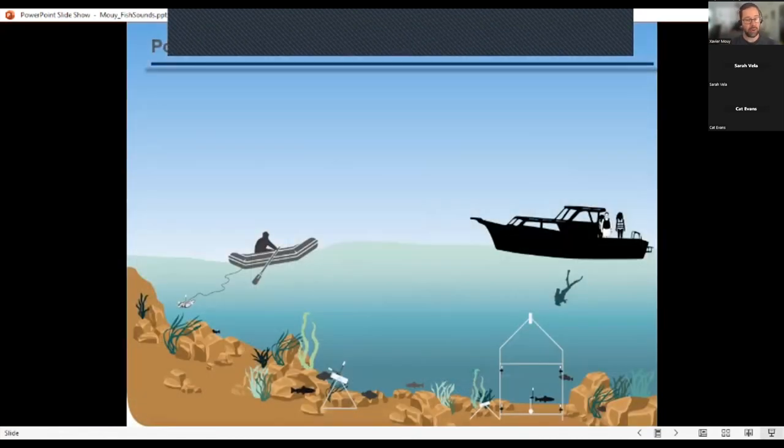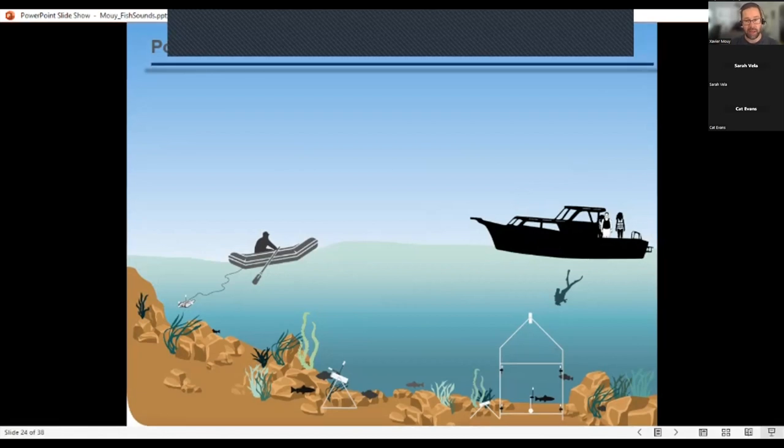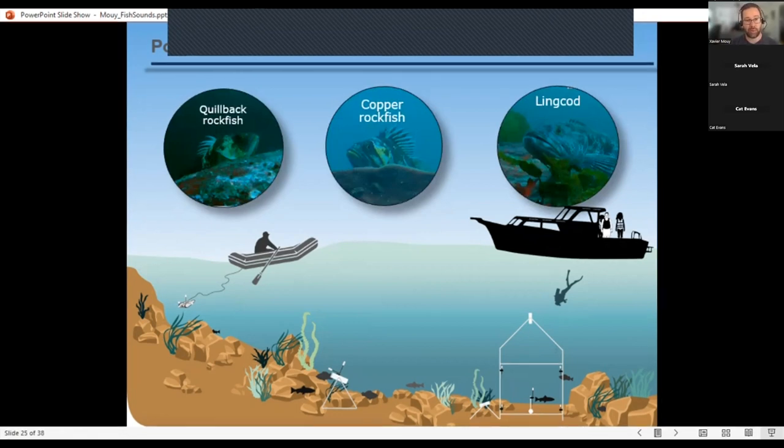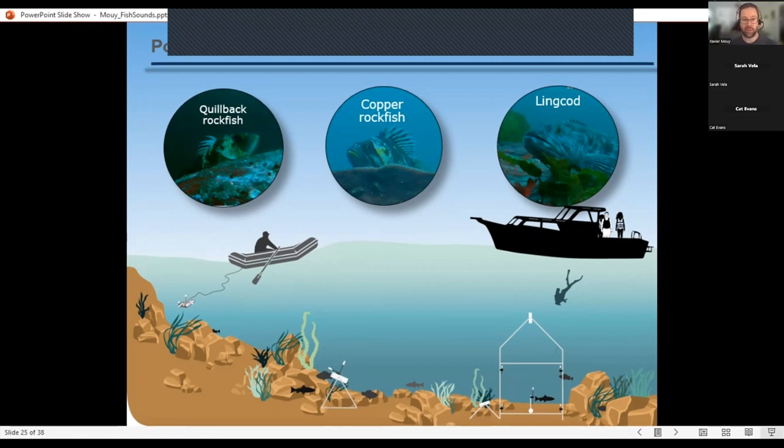So I'm not going to go through example of each array because that would take too much time. But basically with all the deployments in different instruments, we were able to identify sounds from quillback rockfish, copper rockfish, and lingcod. And this is new information because none of these fish had been reported to produce sound. And so this is a new contribution, especially for BC where it's important.